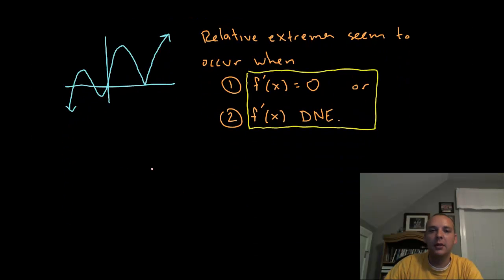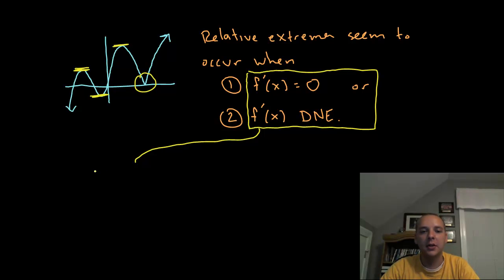Now if we notice something here, relative extremas seem to occur only when the derivative is zero, like here or here or here, or a lesser known way to be a relative extrema, you might have the derivative does not exist, like at the corner of an absolute value graph or a cusp or what have you. So that's going to be important for us. Now matter of fact, I'm actually going to give these guys a name. If the derivative for a function equals zero at a given x value or it does not exist, we're going to call these guys critical points.